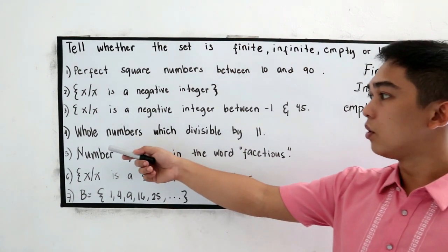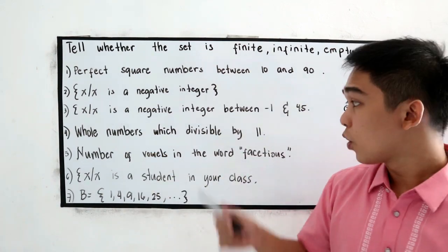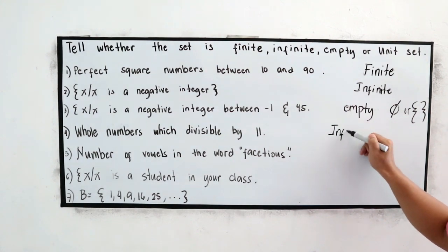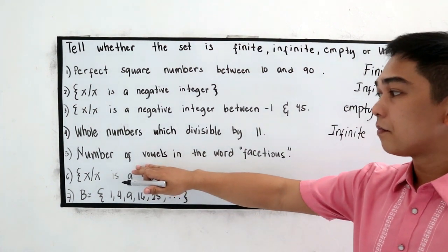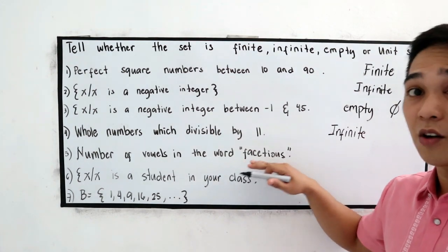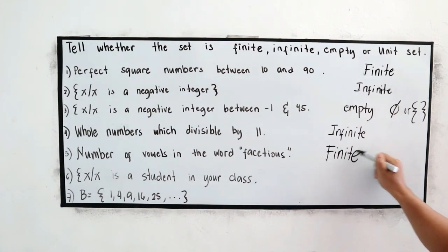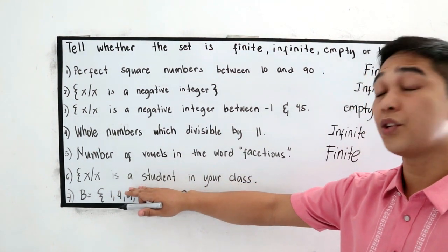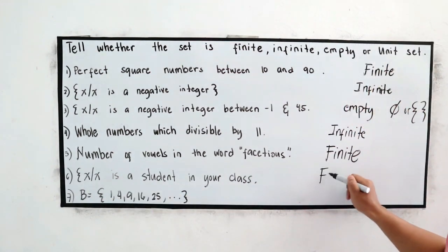Number four, whole numbers which divisible by 11. So we have a plenty of whole numbers which is divisible by 11. So we cannot count so that is infinite. Number five, number of vowels in the word fetus. Can we count the number of vowels? Yes, so this is finite. Six, x such that x is a student in your class. Of course you can count the number of students in your class so this is finite.